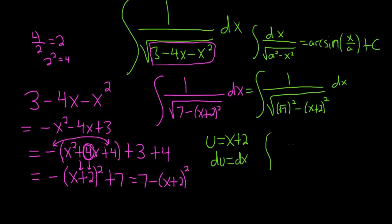And this will become 1 over the square root of the square root of 7 squared minus u squared, right? Because your u is x plus 2 and then du. And we're finally there. We're at a position where we can use our super powerful formula.